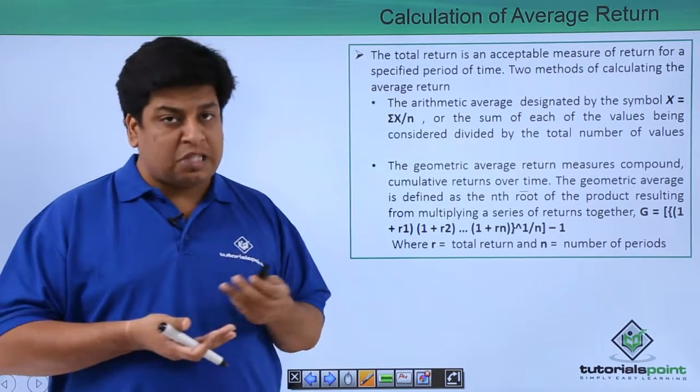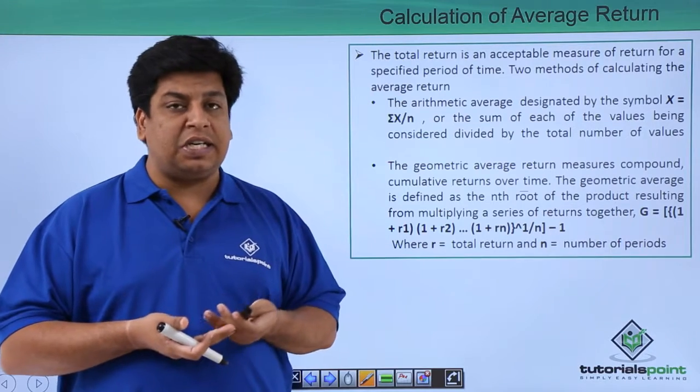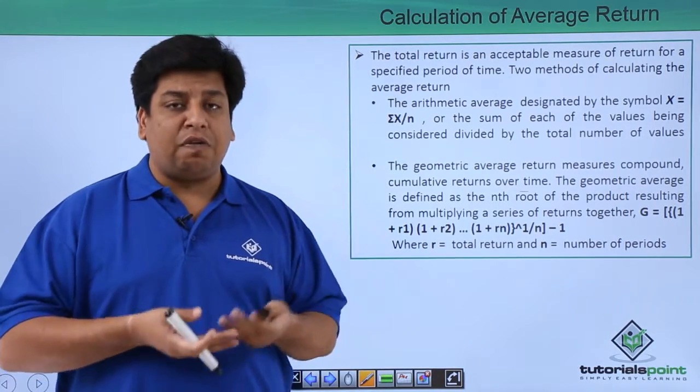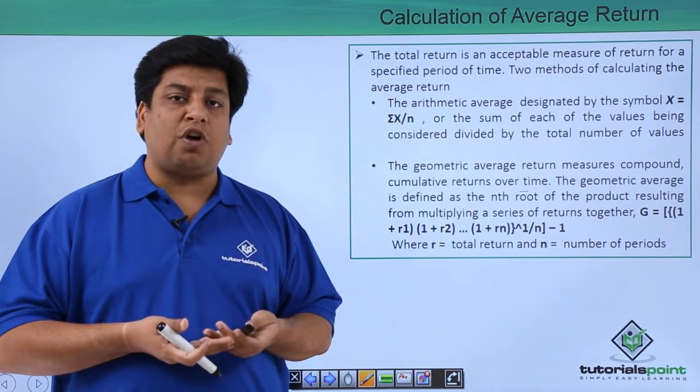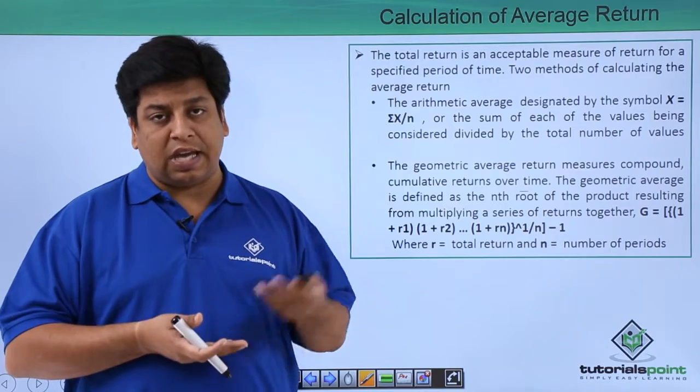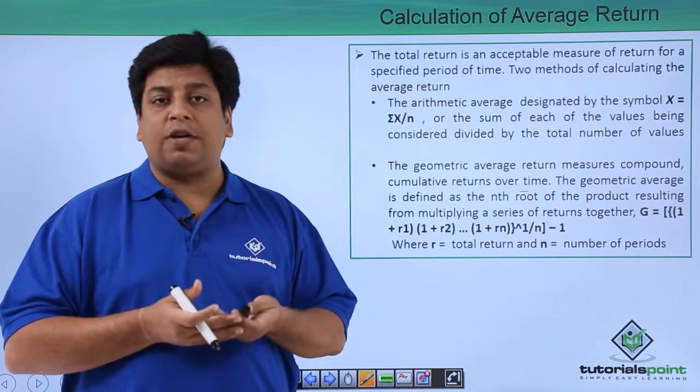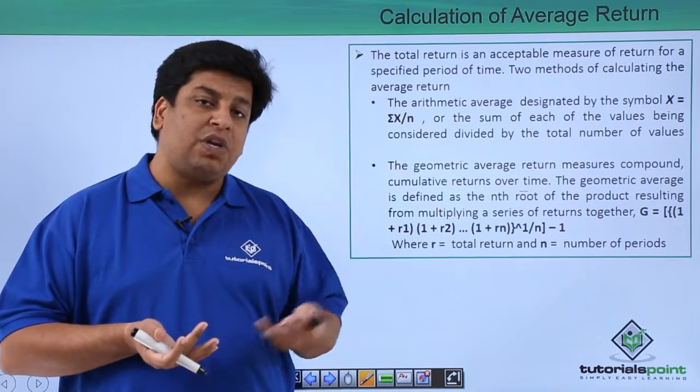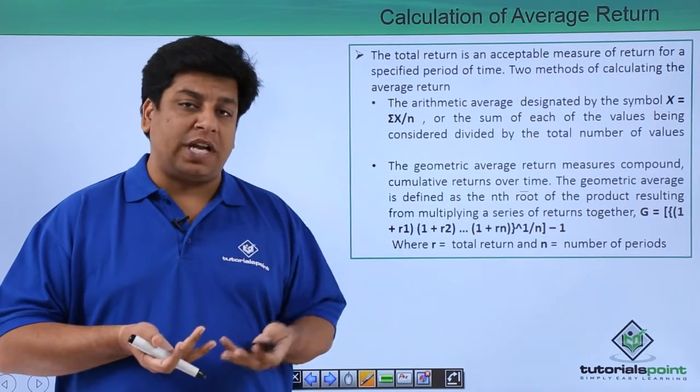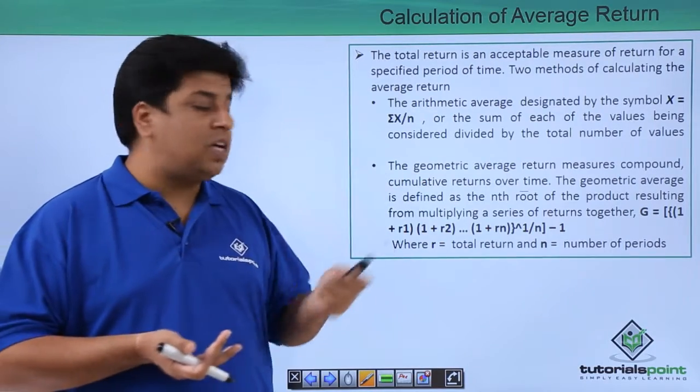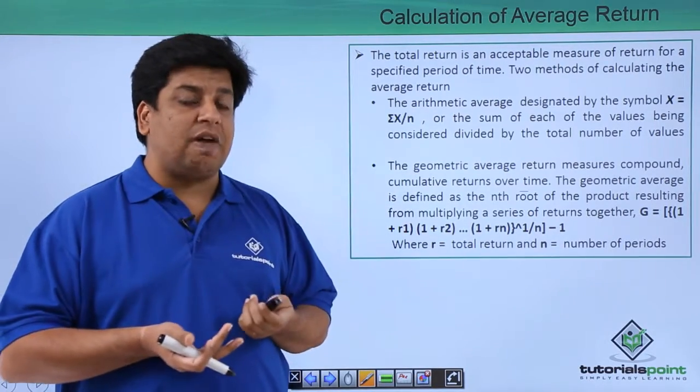First one is the arithmetic average, which is summation of X divided by n. For four given periods, you have four returns: r1, r2, r3, and r4. You add all of them up—r1 plus r2 plus r3 plus r4—and divide by four, which is your n. That's the formula: summation of X divided by n.